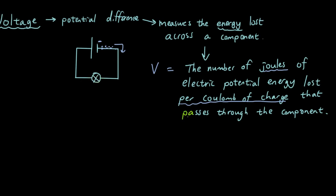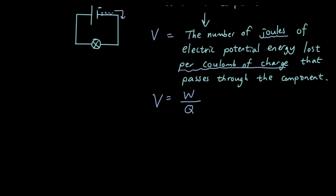So in equation form, V is equal to W over Q. So what's W and what's Q? V is the voltage measured in volts, and the definition is over here.